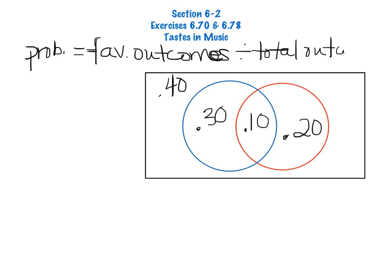As we're looking at exercise 6.78, part A, we are asked the question, what is the conditional probability that a student likes gospel music if we know that he or she likes country music? So another way of phrasing that question is, out of all of those students who like country music, what is the probability that they also like gospel music?